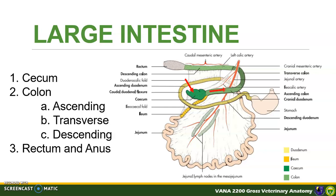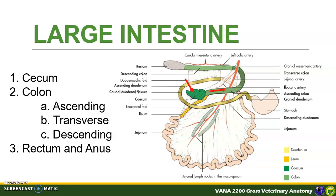The large intestine is composed of the cecum, the ascending colon, the transverse colon, the descending colon, and the rectum and anal canal. The large intestine is short and unspecialized. The large intestine of the dog is much simpler than that of other domestic animals — neither haustra nor taenia exist, nor are flexures or spirals present. In general, it is a simple tube only slightly larger in diameter than the small intestine, and its most important function is the dehydration of fecal contents.